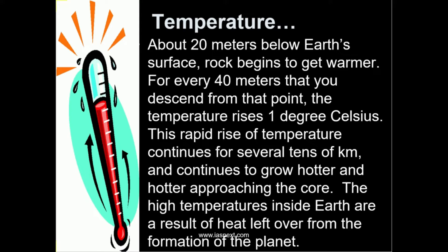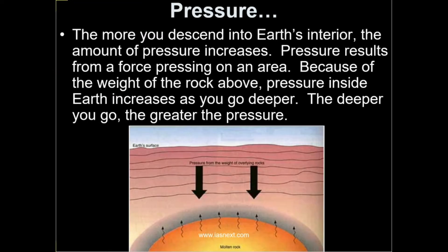Even at high temperature, the material at the center of earth is in a solid state because of the heavy pressure. As we descend into the earth interior, the amount of pressure also increases. The pressure results from the force pressing on an area. Just like temperature, pressure is also increasing from the surface towards the center of the earth, due to the huge weight of overlying material and rocks. It is estimated that in the deeper portion, the pressure is nearly three to four million times more than the pressure of atmosphere at sea level. At high temperature, the material beneath will melt, but due to heavy pressure towards the center of the earth, this molten material acquires the properties of solid and is probably in a plastic state.